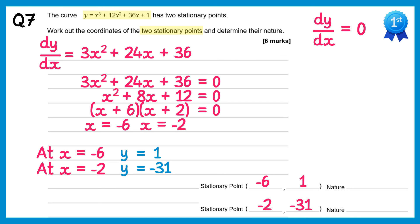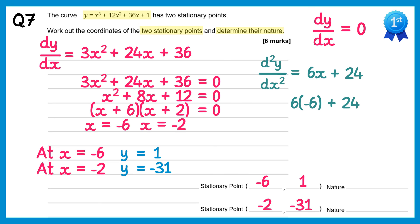We haven't finished the question — we also need to determine the nature of each stationary point. Differentiating dy/dx to get d²y/dx²: 3x² differentiates to 6x, 24x gives plus 24, and 36 gives 0. At x equals negative 6: 6(−6) + 24 = −36 + 24 = −12. Since d²y/dx² is less than 0, this is a maximum.